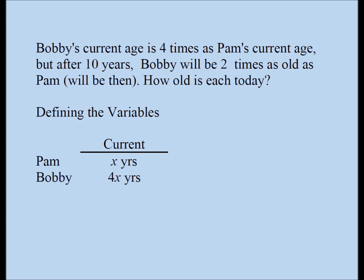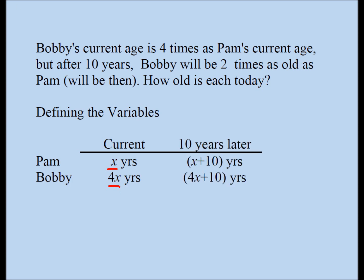How do we define the variable? Well, if Bobby is four times as old as Pam, I'm going to assume Pam is x years old today, or currently. Then Bobby will be 4x years old currently. If that's the case, in 10 years, Pam will be her current age plus 10, and Bobby will be his current age plus 10. So 10 years from today, Pam will be x plus 10 years old and Bobby will be 4x plus 10 years old.